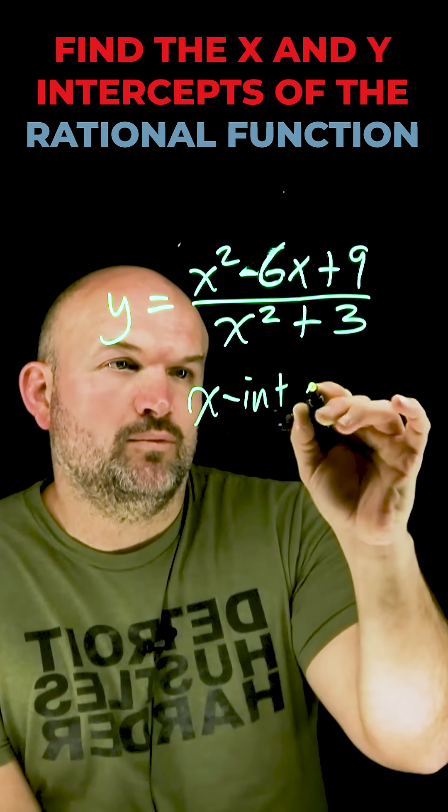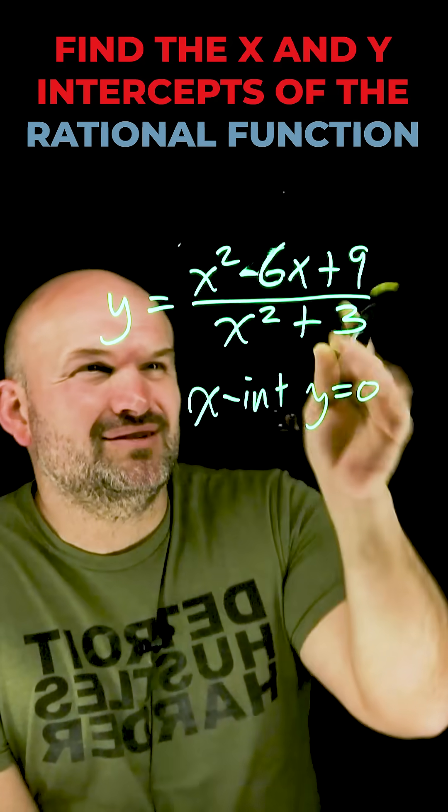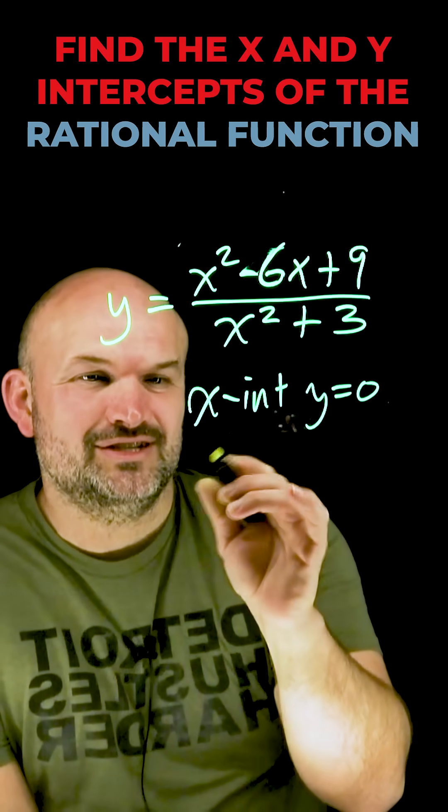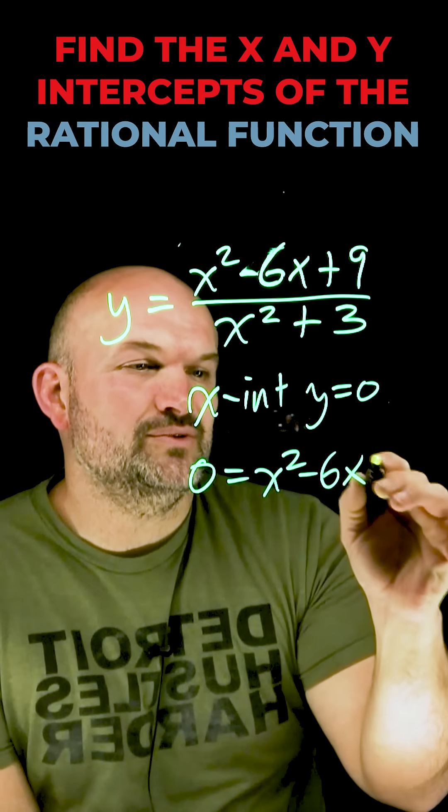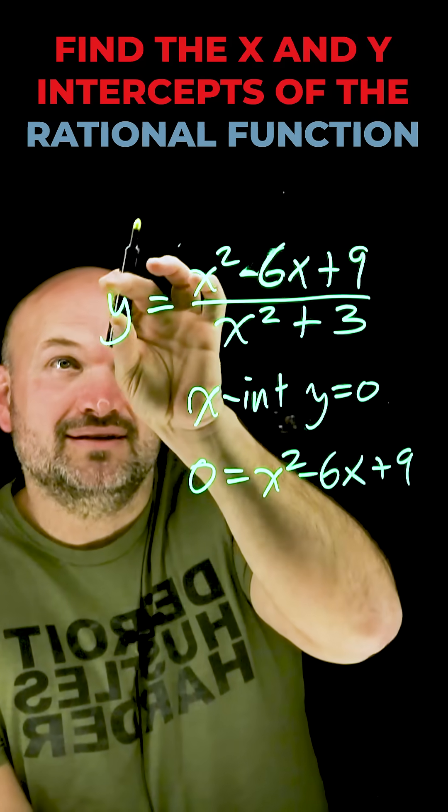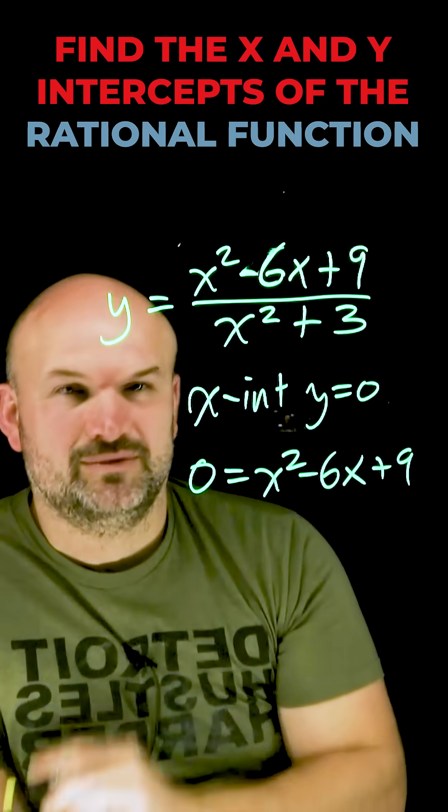The x-intercept is going to be when y is equal to 0. But in reality, we don't really want to replace y equals 0 because then we've got to multiply the denominator on both sides and then solve for x. The easy way to look at this is just take your numerator and set it equal to 0. That's going to yield you the exact same result if you swap to 0, multiply it on both sides because your denominator times 0 is just going to be 0. So skip to the good part and just put your numerator equal to 0.